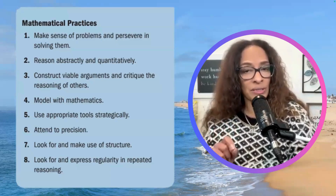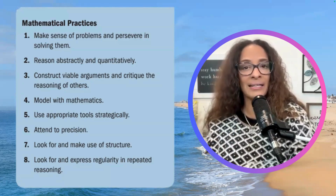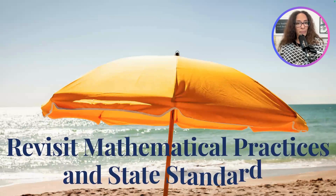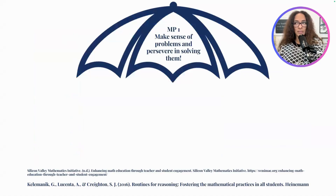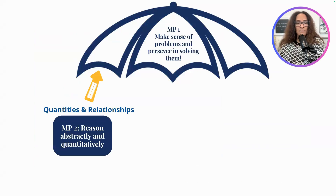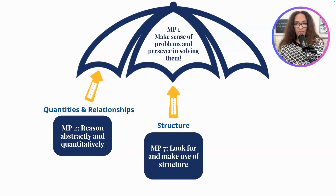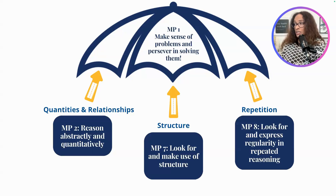There is a book called Routines for Reasoning, and what they've done is look at the mathematical practices as an umbrella model. We have Mathematical Practice 1 — making sense of the problem and persevering in solving them — and then three avenues of thinking: MP2, reasoning abstractly and quantitatively; the avenue of structure, looking for and making use of structure; and repetition — look for and express regularity in repeated reasoning.